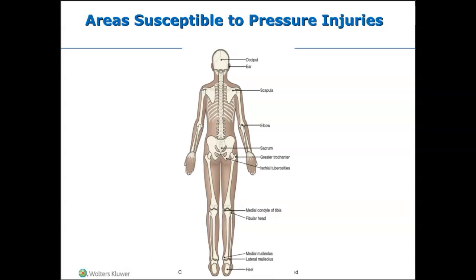Areas where patients are susceptible to pressure injuries include the back of the head (occiput), ears, cheeks and nose (especially when wearing oxygen), scapula, elbows, sacrum, knees, heels, and hips.